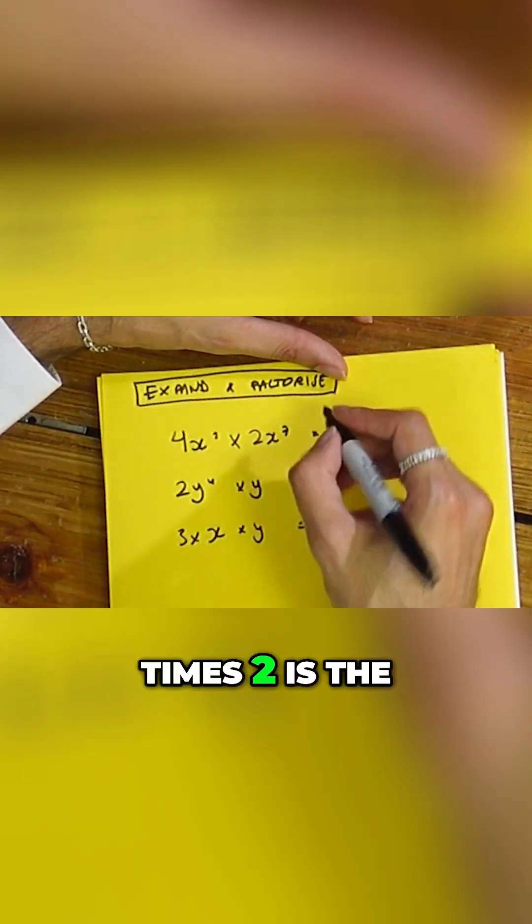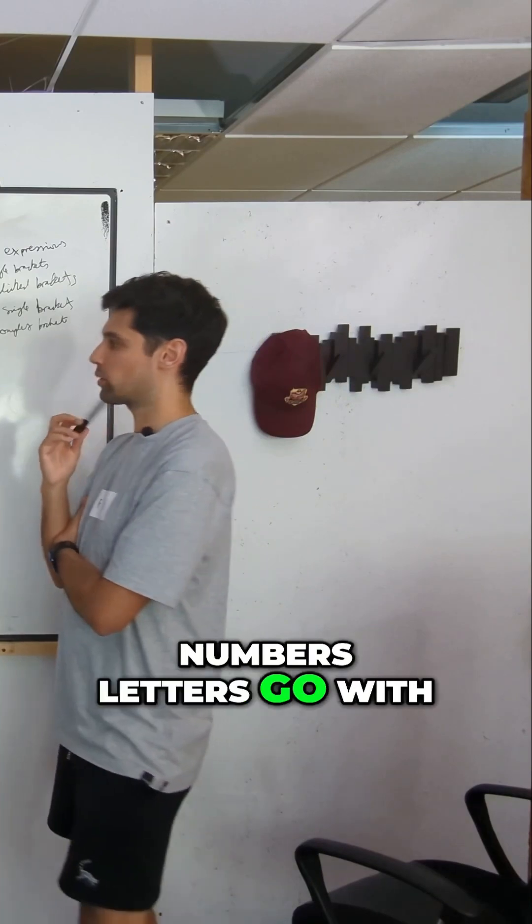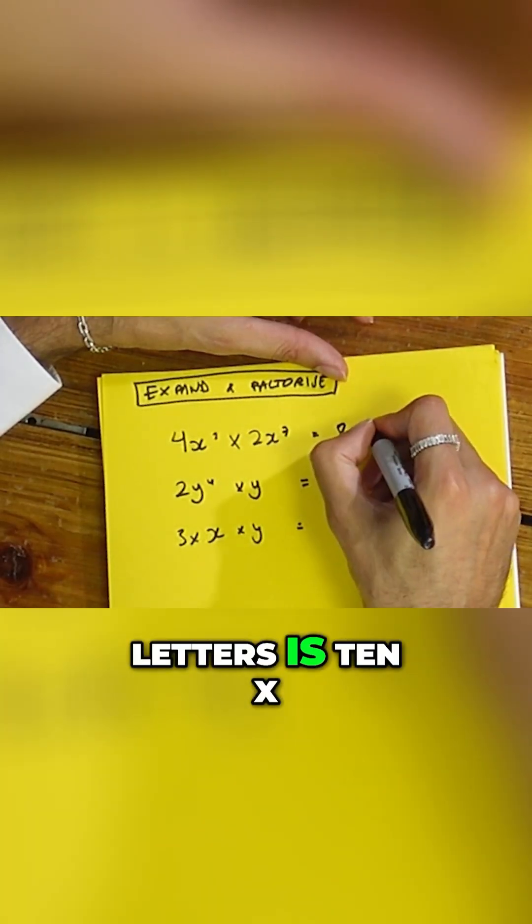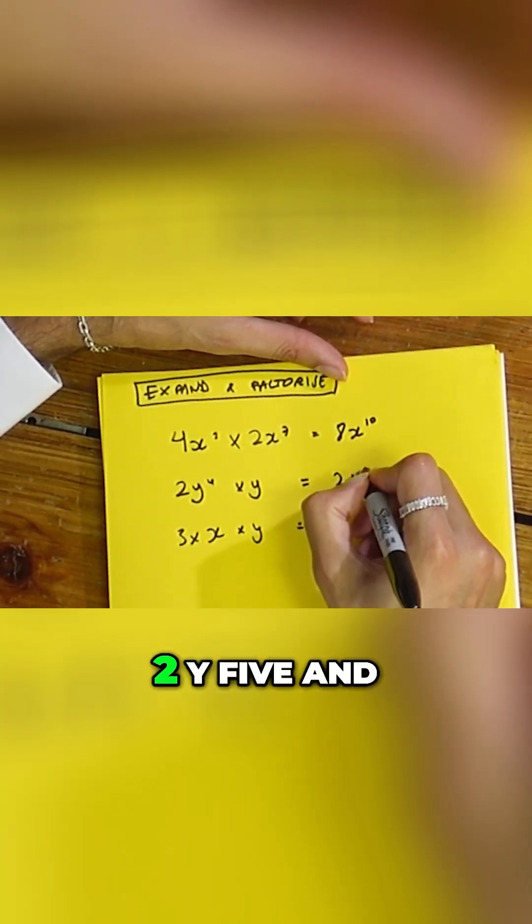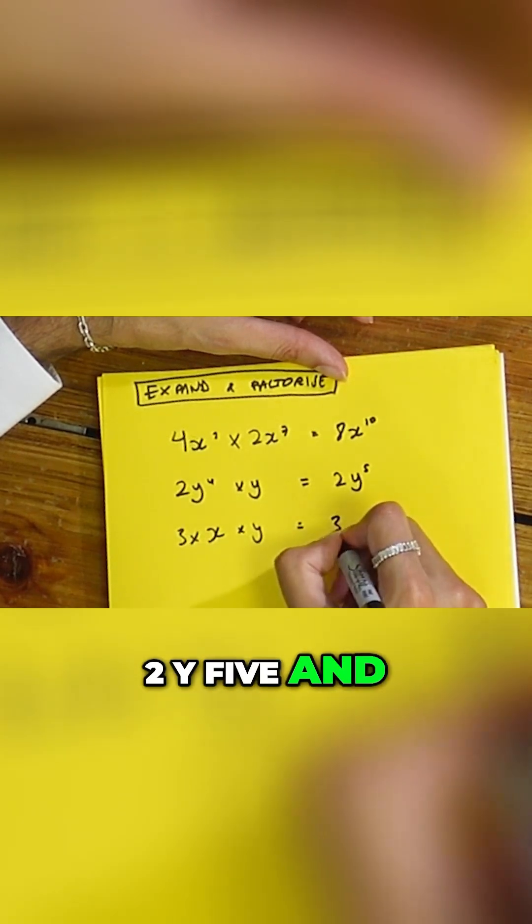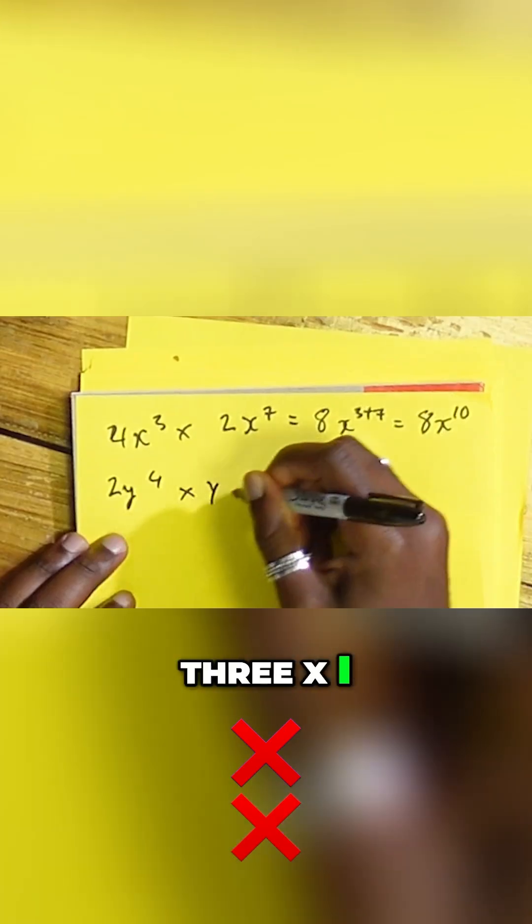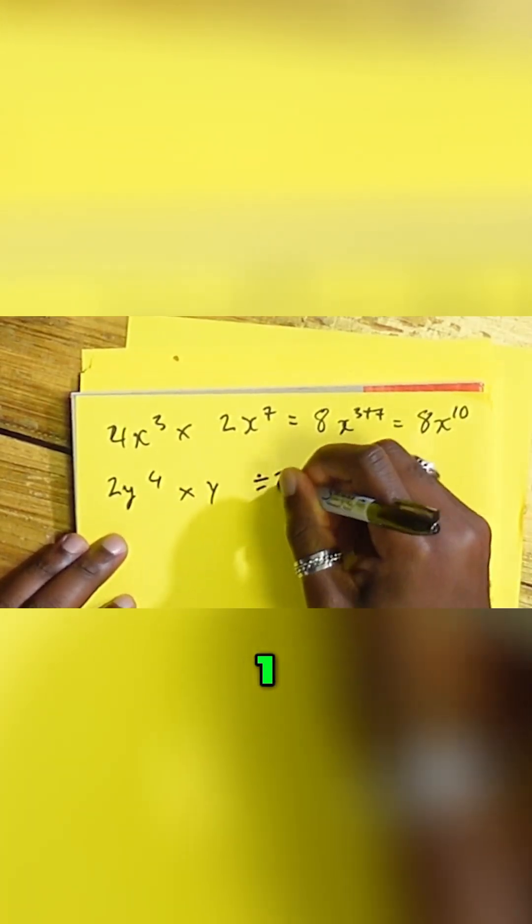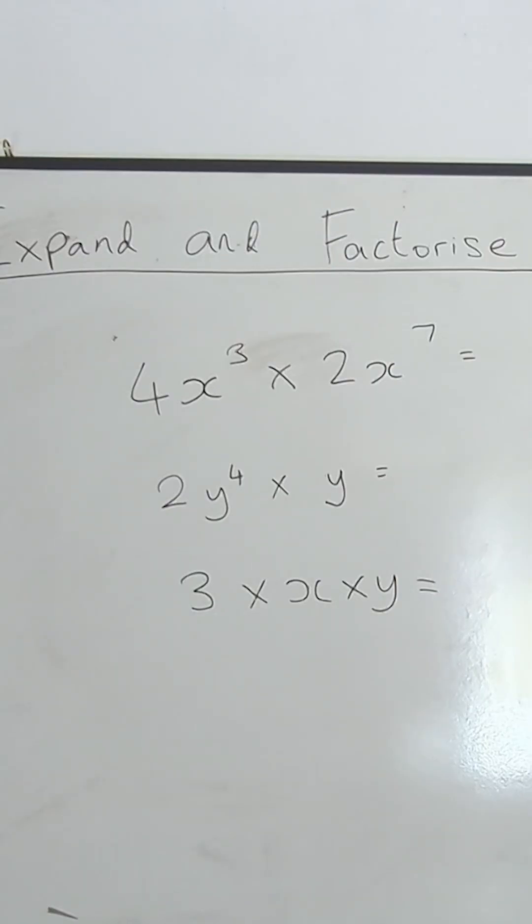So the four times two is the eight. Numbers go with numbers, letters go with letters. Negative six, three, seven is ten. X, two, Y, five. And three, X, Y and everybody. I know that one. Two is Y. Three, two, five and then the last one.